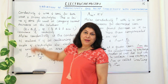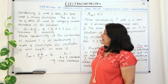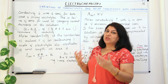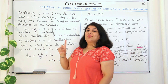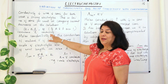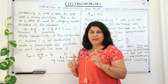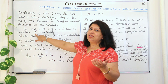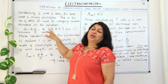Conductance G is equal to kappa (κ), which is conductivity, multiplied by area divided by length. If the area of cross-section is one unit and the length is also one unit, then conductance equals conductivity. So conductivity can be defined as the conductance of a solution when the area of cross-section is one meter square (or one centimeter square) and the length is also unity — one meter or one centimeter.